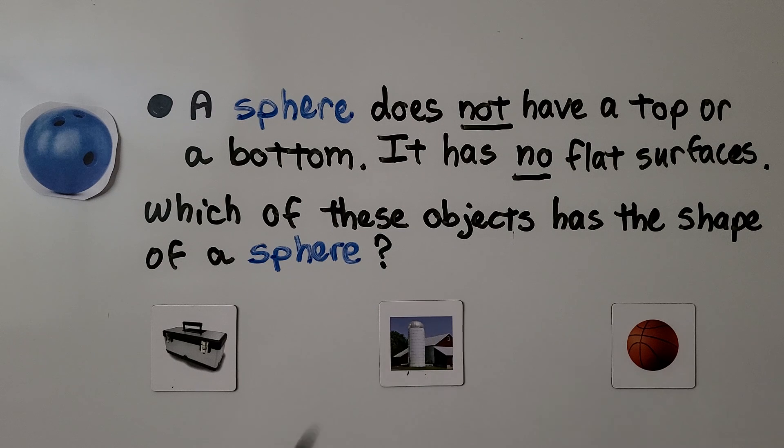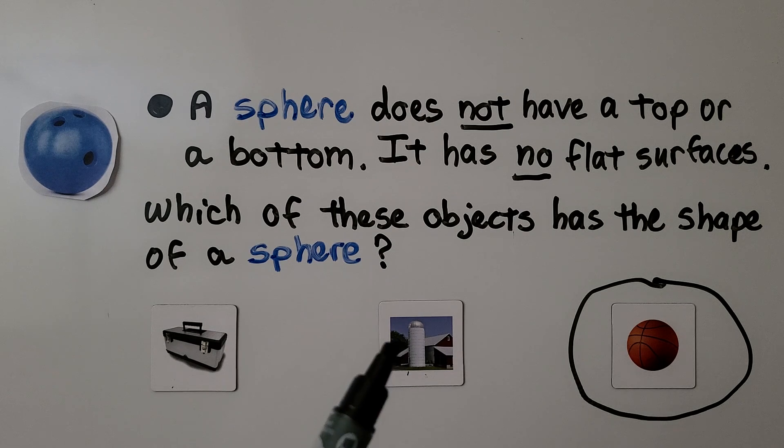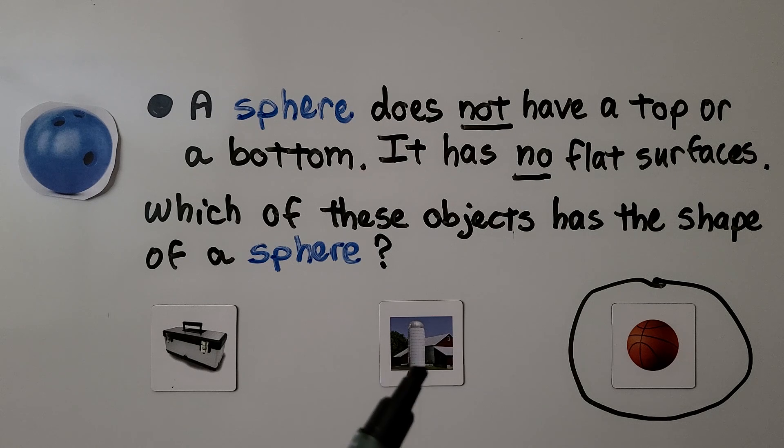If you said the basketball, you're right. It has no top or bottom, and it has no flat surfaces. This has a curved surface, but it has a bottom, doesn't it? This farm silo.